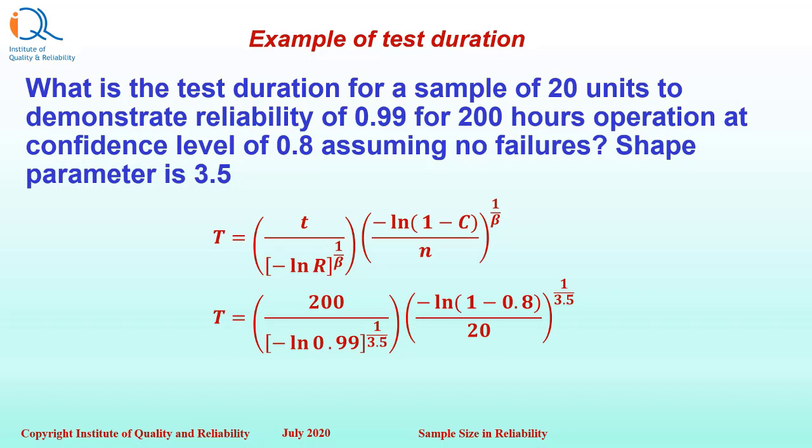Looking at the formula given earlier and substituting these values, we get time equal to 362 hours. The sample size was 20. All 20 samples need to be tested for 362 hours without any failures to demonstrate reliability of 0.99.